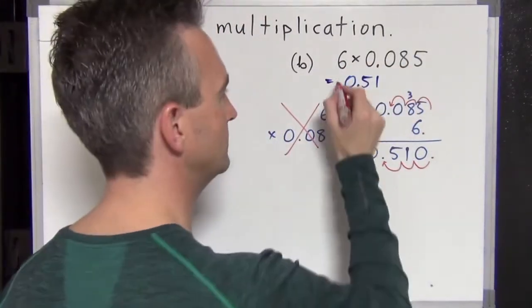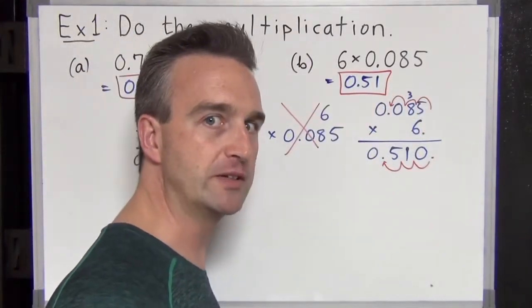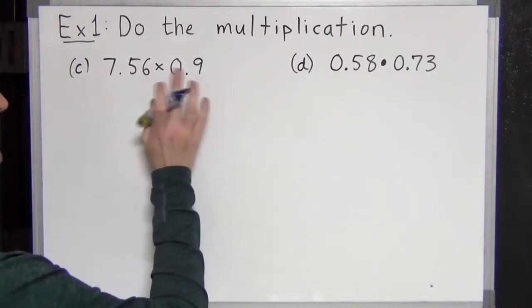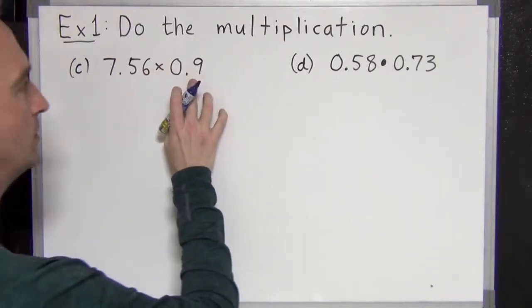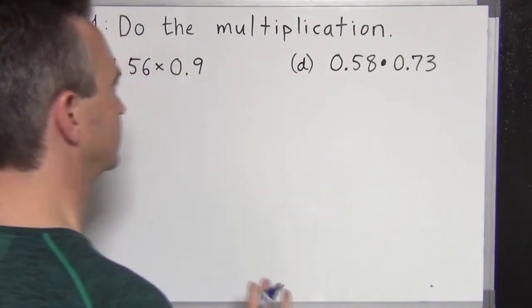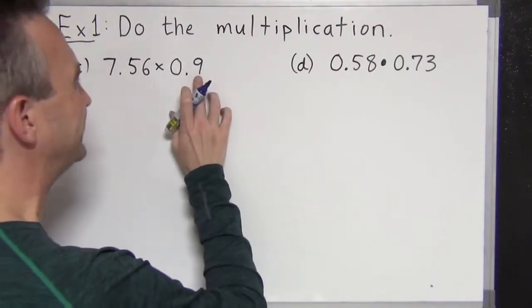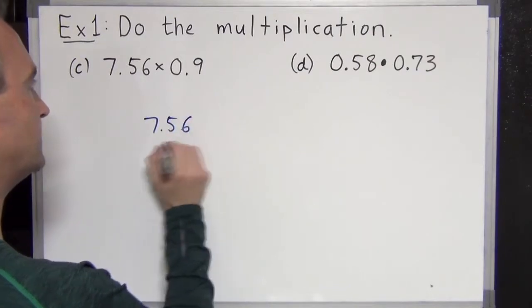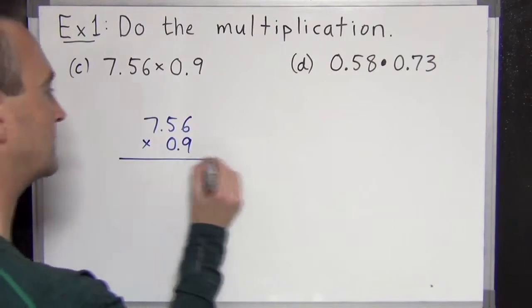Not too hard, right? But different from decimal addition and subtraction, obviously. Two more examples. C and E. So here we have 7.56 times 0.9. So this is a 2 decimal number times a 1 decimal number. But we shouldn't actually think of it like that. It's more like a three digit number times a one digit number. So let's treat it like that. 7.56 times 0.9. We just want to align the 6 and the 9. Don't forget.